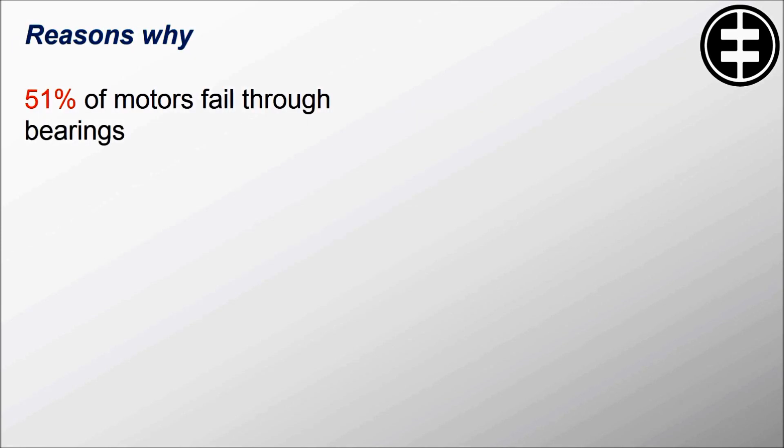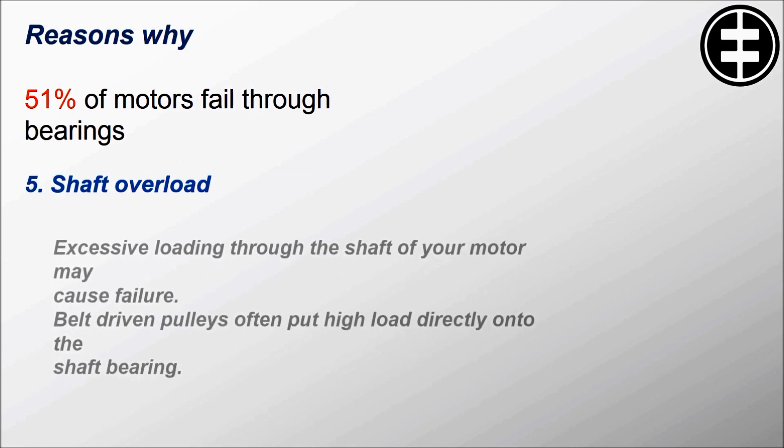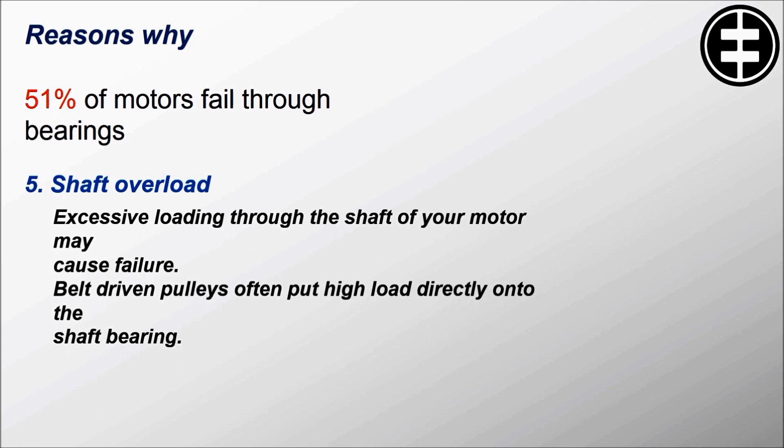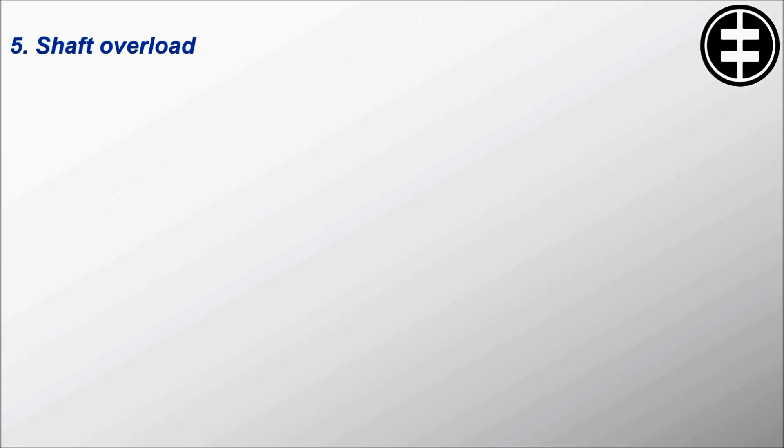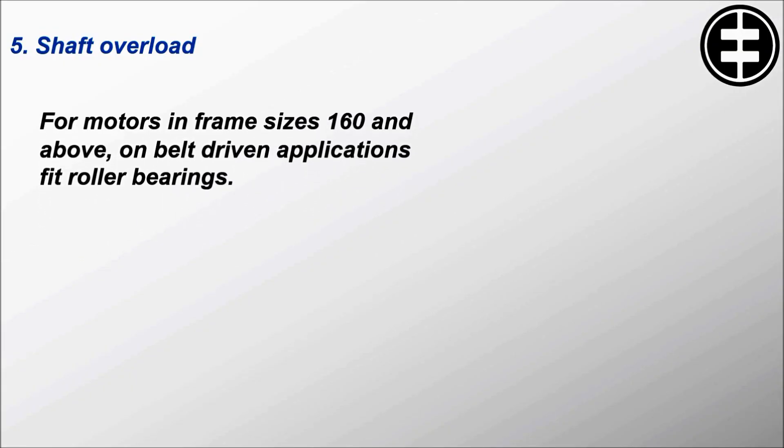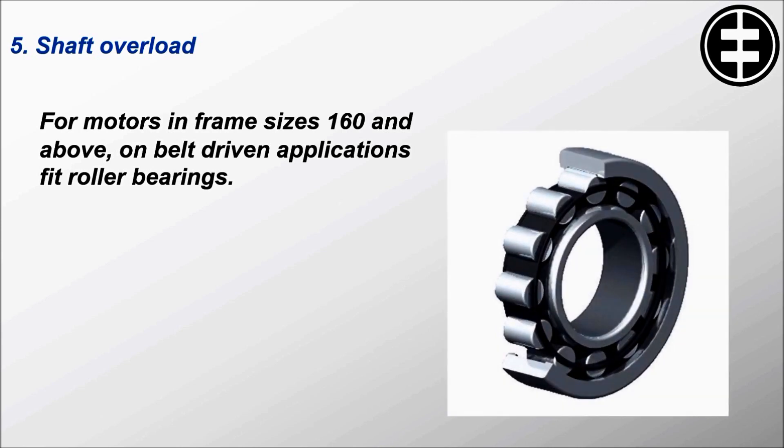Reason number five is shaft overload. Excessive loading through the shaft of your motor may cause failure. Belt-driven pulleys often put high load directly onto the shaft bearing. For motors in frame sizes 160 and above on belt-driven applications, fit roller bearings to deal with the expected shaft overload.